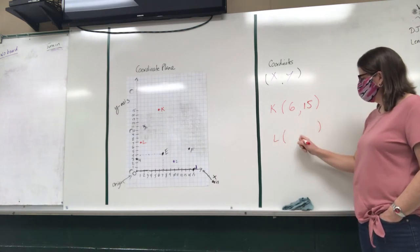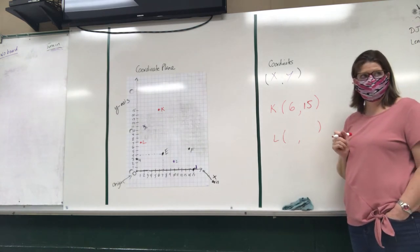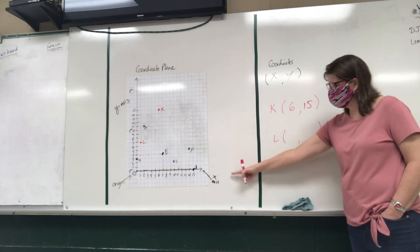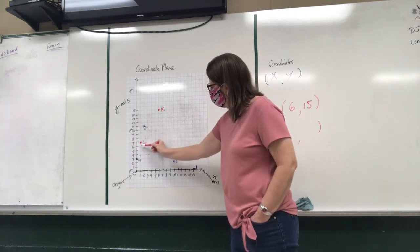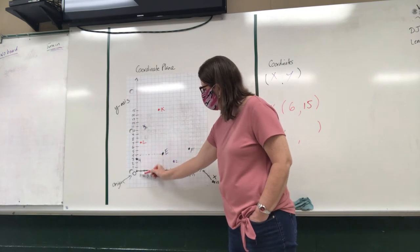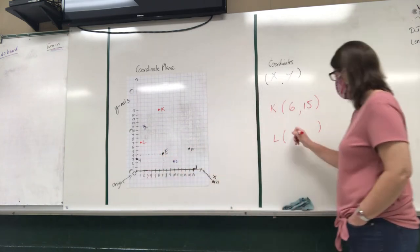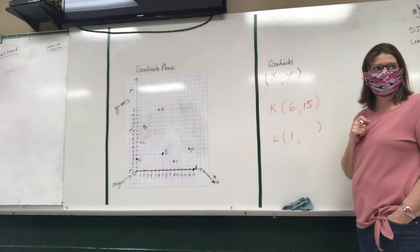Let's try another one together. So x comes first. So here's my x-axis. So if I'm here at L, I'm going to travel down to 1. So my x coordinate is 1.